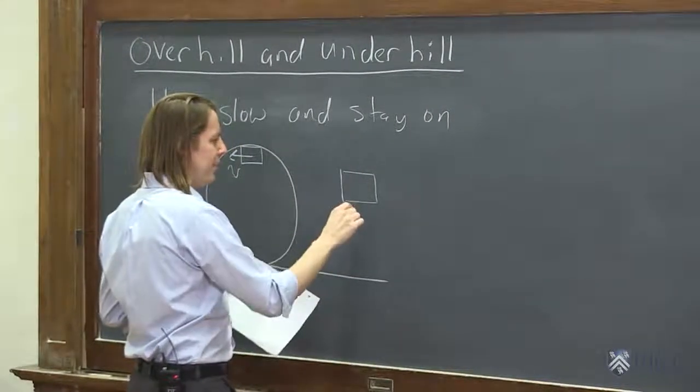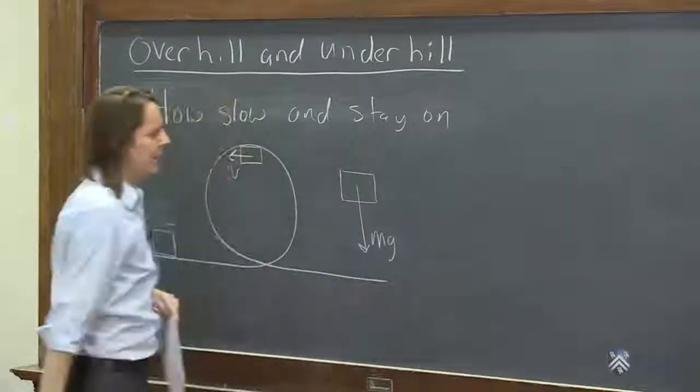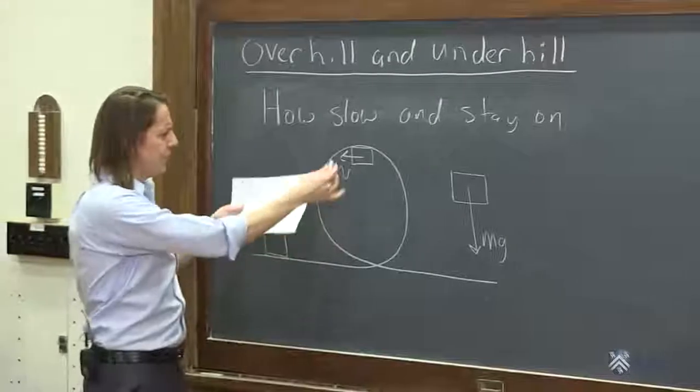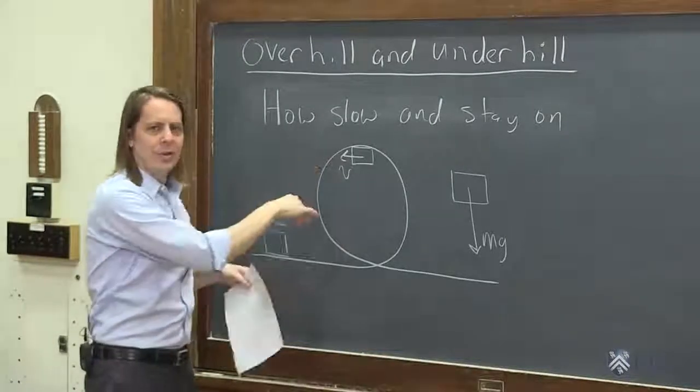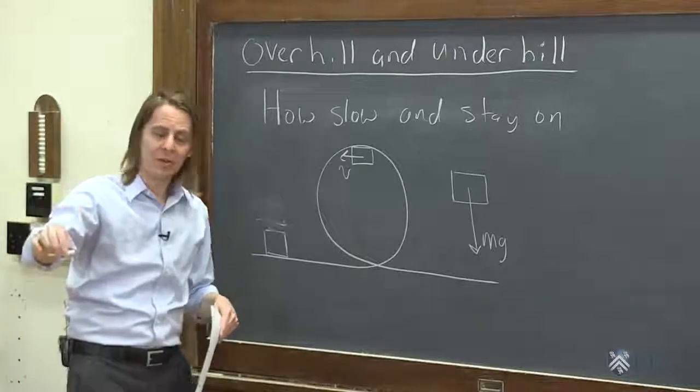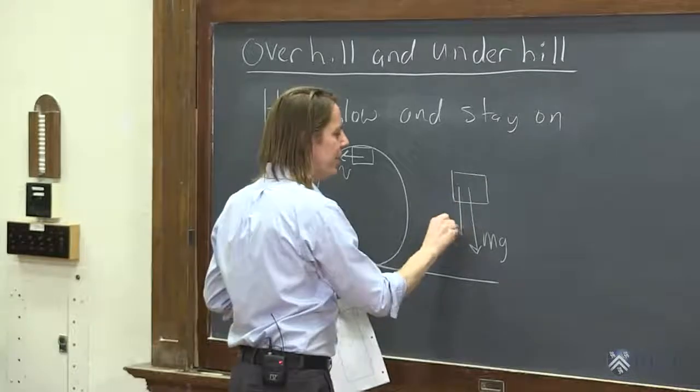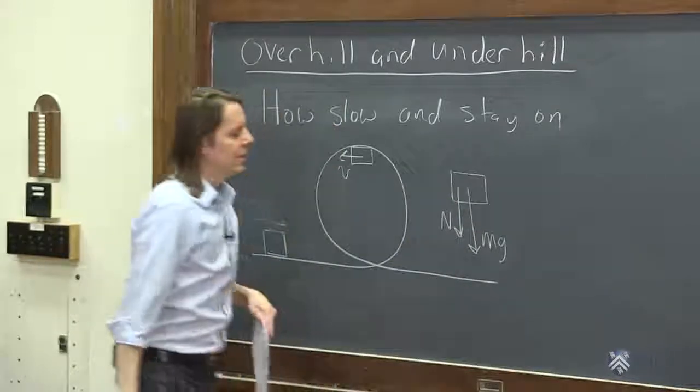You draw a free body diagram and you say, let's see, there's mg down pulling it down. And what other forces are there? Well, the track pushes on it. There's a normal force. We don't just think about a normal force when something is sitting on a table. We also think about a normal force when things are moving. So there's also a force down I could draw like that and call it N.